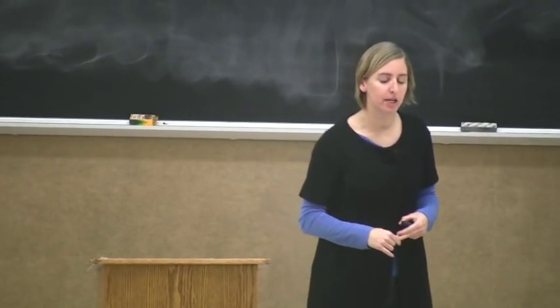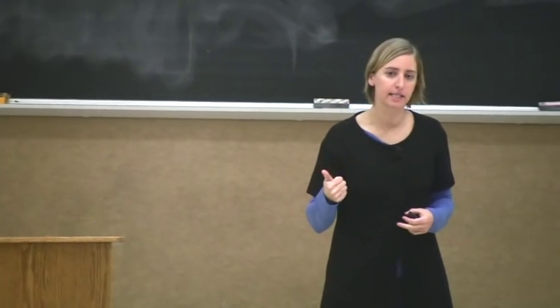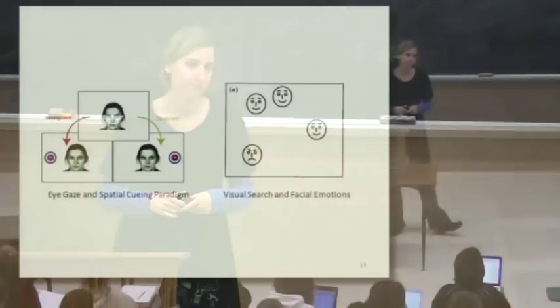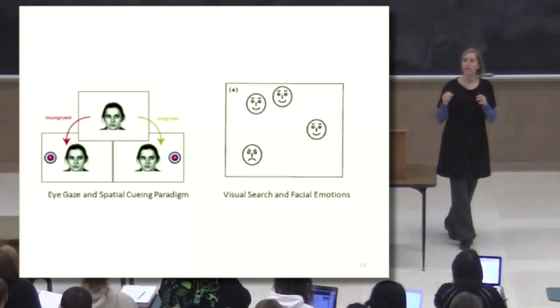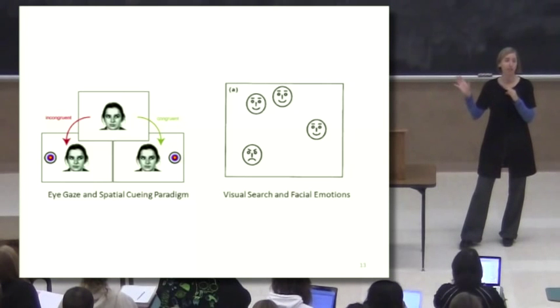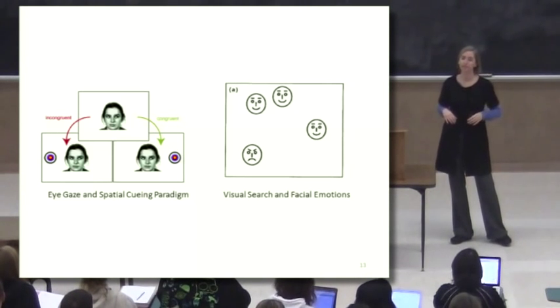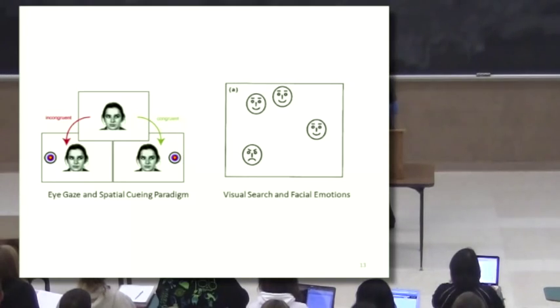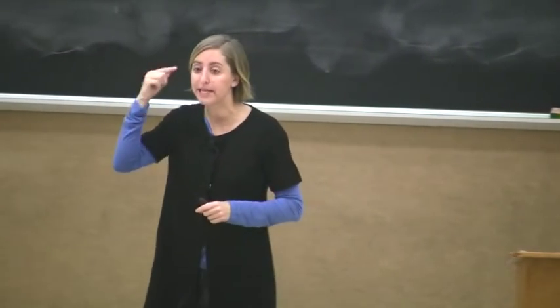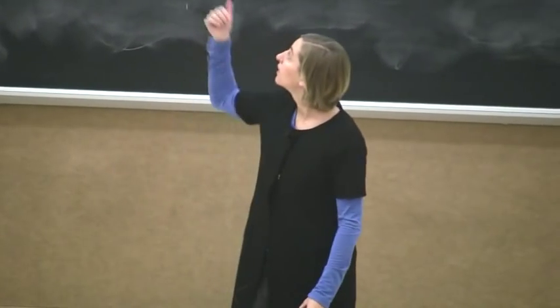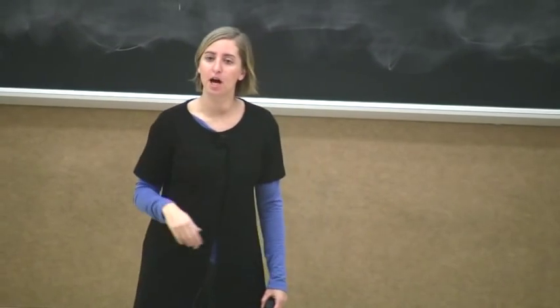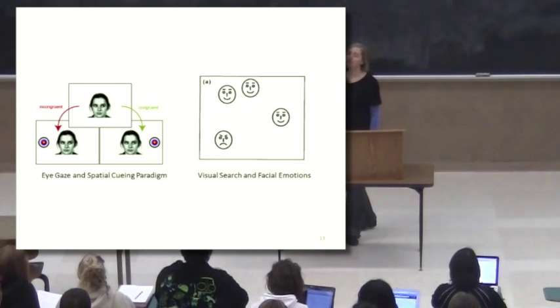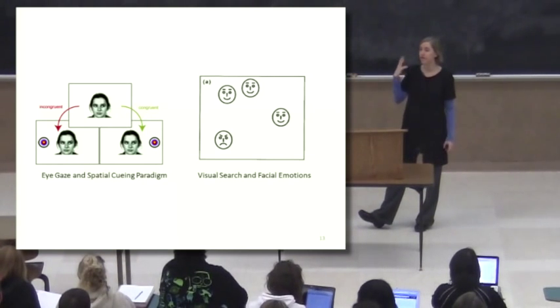There are two aspects of faces that are especially important to us: eye gaze and emotion. Ways that these have been studied in the lab. For eye gaze, we use a spatial cueing paradigm, where we look at whether a target appears at the same place that the person's looking, that's a congruent case, or whether the target appears in a different location, that's an incongruent case. And we find that people are much faster in the congruent case than the incongruent case. This suggests that our perceptual system is picking up where people are looking. Another task is the visual search task, similar to what we saw with the looming stimuli. And in this case, we have found that angry faces are found more quickly than any other expression. So we're very sensitive to angry expressions.